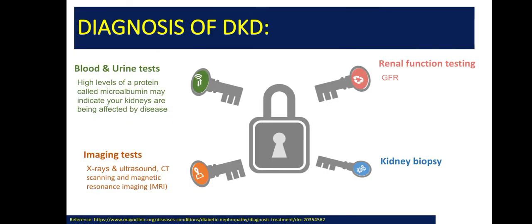Now, how do we diagnose diabetic kidney disease? We send blood and urine tests for microalbumin level, and renal function testing like creatinine level. We calculate the creatinine clearance and glomerular filtration rate. We can also send imaging tests like X-rays, ultrasound, CT scan, and MRI. And last, we can go for kidney biopsy.